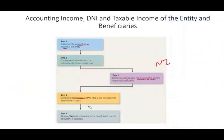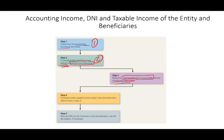We're going to use these steps to compute the taxable income for estate and trust. Step one: determine accounting income — the first thing we learn today. Step two: compute entity taxable income before the distribution deduction. Step three: determine the DNI and the distribution deduction. Once you determine DNI, you can determine your distribution deduction.